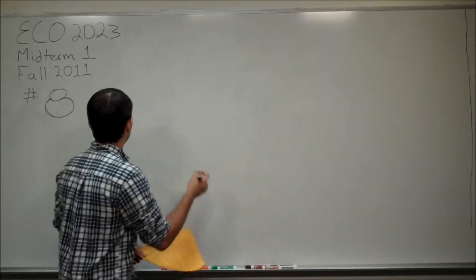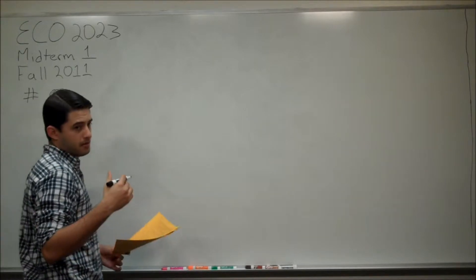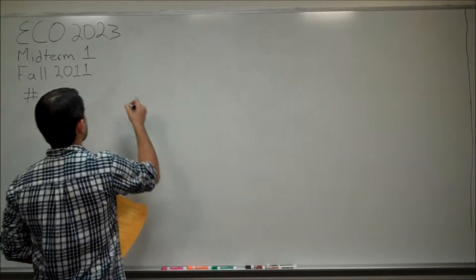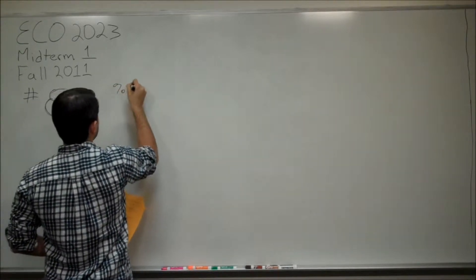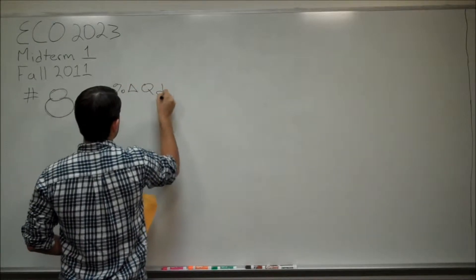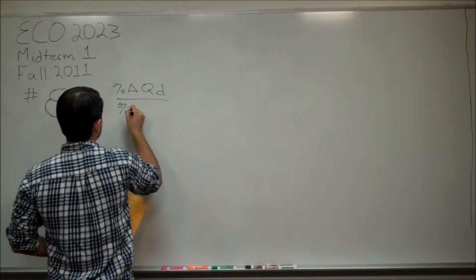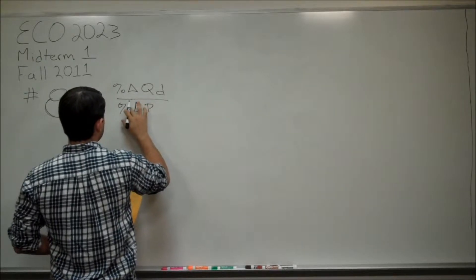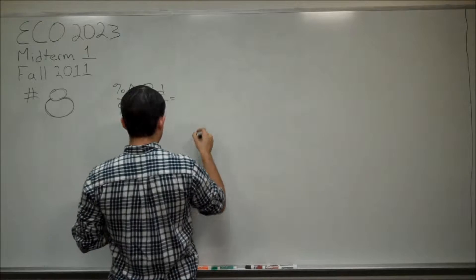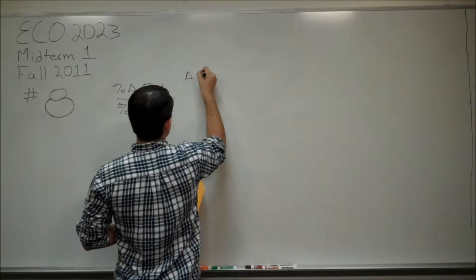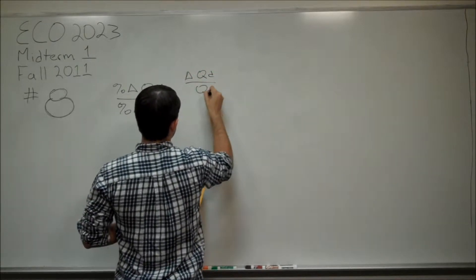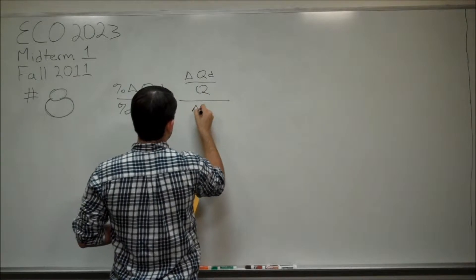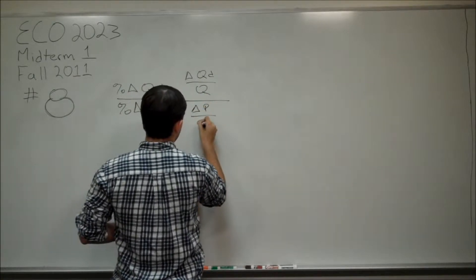The first thing we should do is get the formula for figuring out the price elasticity of demand. That is the percentage change in the quantity demanded divided by the percentage change in the price. This can be rewritten as change in quantity demanded over quantity divided by change in price over price.